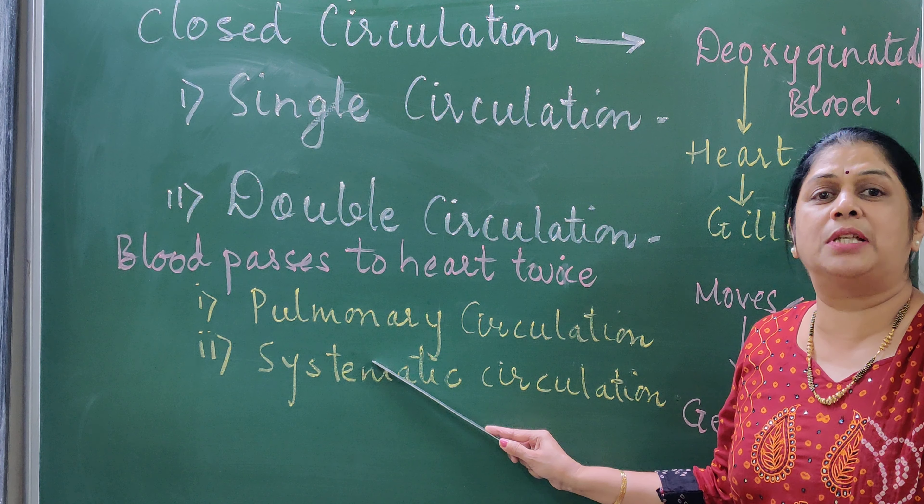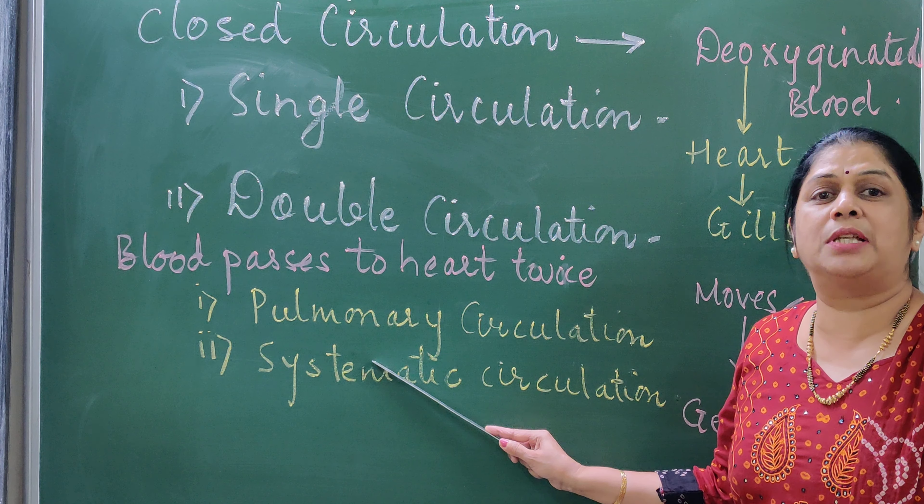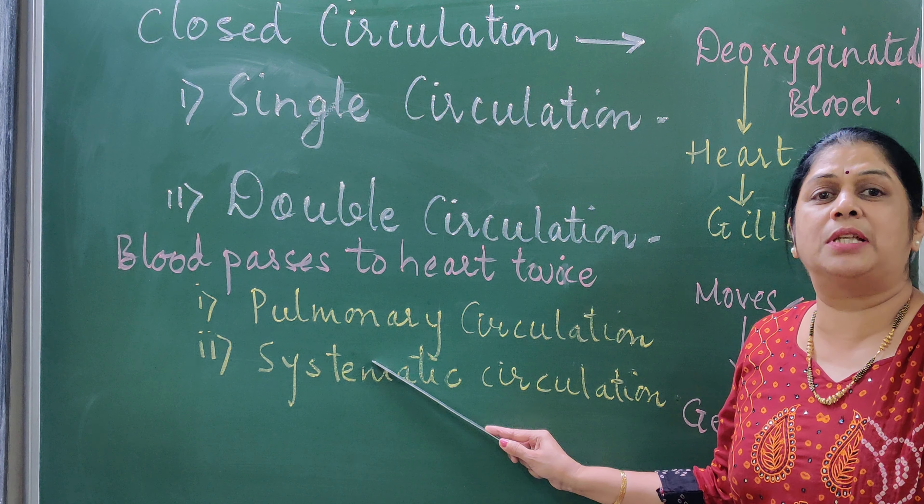From Pisces, the next animals in evolution are the amphibians. In amphibians, like a frog, the heart is three-chambered with two atria and one ventricle. In reptiles, the heart is imperfectly four-chambered — it does not consist of two perfect ventricles. Such a heart is called imperfect. Whereas in birds and mammals, like human beings, the heart is perfectly four-chambered.